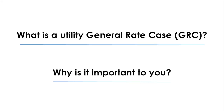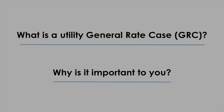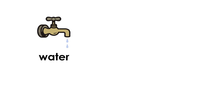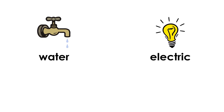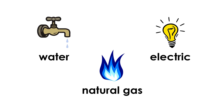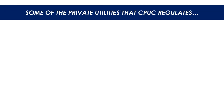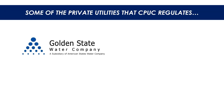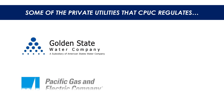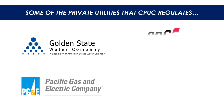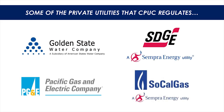One of our responsibilities here at the CPUC is to regulate investor-owned utilities to make sure the utilities provide safe and reliable service at affordable prices, which we call rates. These regulated private companies include water utilities and electric and natural gas utility companies.